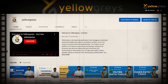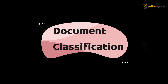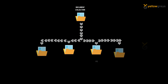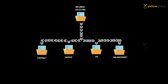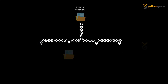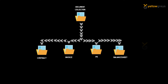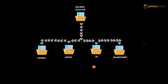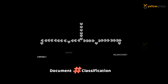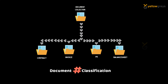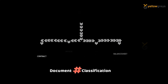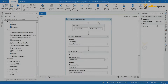Before that, we need to understand what classification is. Assume that we have a thousand PDFs or any other documents with different formats — such as a contract, offer letter, invoice, purchase order, balance sheet, and so on. Now I want to split the files based on document category. This is what we call document classification in the UiPath Document Understanding concept.